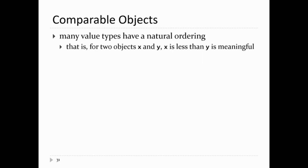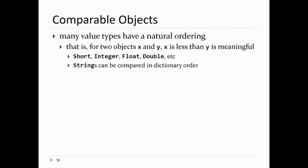So for two values X and Y it makes sense that you want to ask the question: is X less than Y? So for example if you want to sort a list of stuff, you have to be able to compare the objects in the list. Things like numbers are all comparable; strings you can compare in dictionary order; dates you can compare by chronological order.